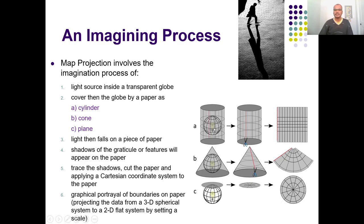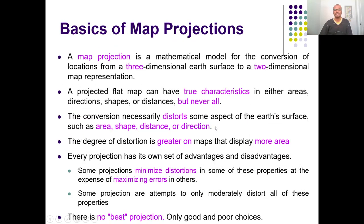Wherever the globe touches the developable surface, the distortion is less because both are interacting — touching each other — so there is no distortion. But away from the developable surface, the object is farther from the surface and you will find more distortions. Although it systematically transforms from a spherical surface to a flat surface, you will still find some amount of distortion.